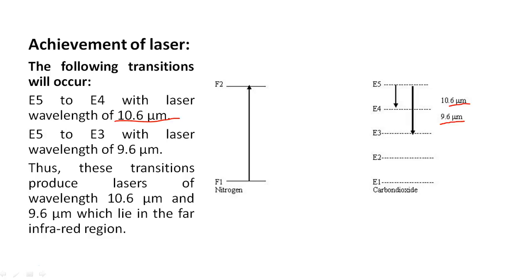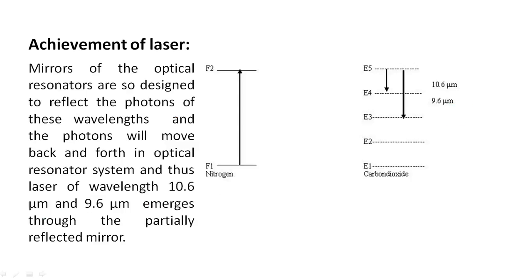Thus these transitions produce lasers of wavelength 10.6 micrometers and 9.6 micrometers which lie in the far infrared region. Mirrors of the optical resonator system are designed to reflect the photons of these wavelengths, and the photons move back and forth in the optical resonator system.